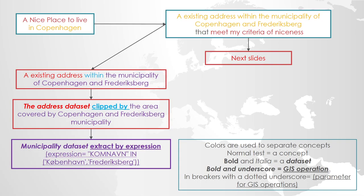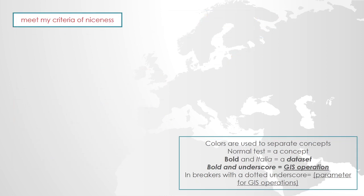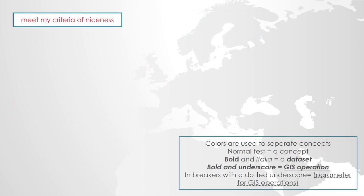So we've covered extracting municipalities and clipping. Now let's look at the concept of niceness. I set up three criteria: you should be able to walk to the main station in Copenhagen — no more than 1500 meters — or walk no more than 200 meters to a bus stop and then ride the bus no more than three kilometers to the main station, or walk up to 500 meters to a station and take the S-train or metro to the airport, no further than five kilometers.